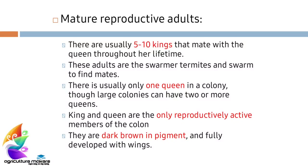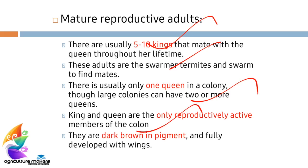Regarding mature reproductive adults, there are usually five to ten kings that mate with the queen throughout their lifetime. These adults are the swarmer termites, and they swarm to find their mates. There is usually only one queen, but if the colony is large there may be two or more queens. The king and queen are the only reproductively active members of the colony, and they are dark brown in pigment with fully developed wings.